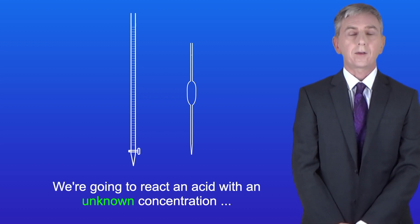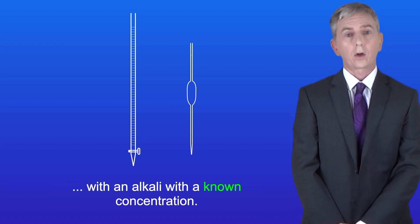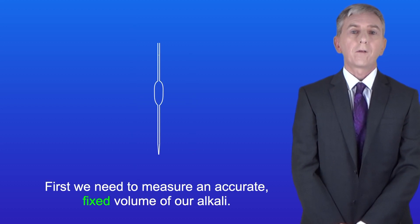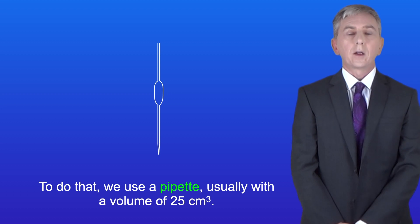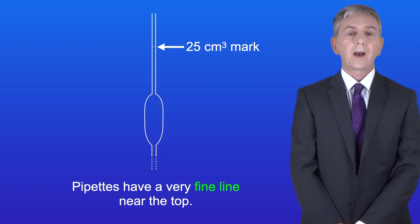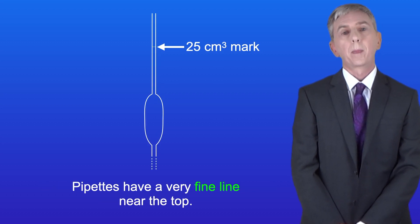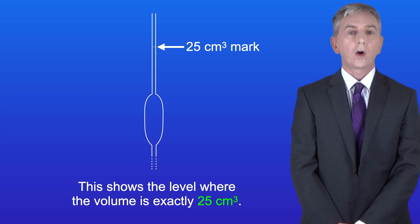We're going to react an acid with an unknown concentration with an alkali with a known concentration. So first we need to measure an accurate fixed volume of our alkali. To do that we use a pipette, usually with a volume of 25 cm³. Pipettes have a very fine line near the top. This shows the level where the volume is exactly 25 cm³.